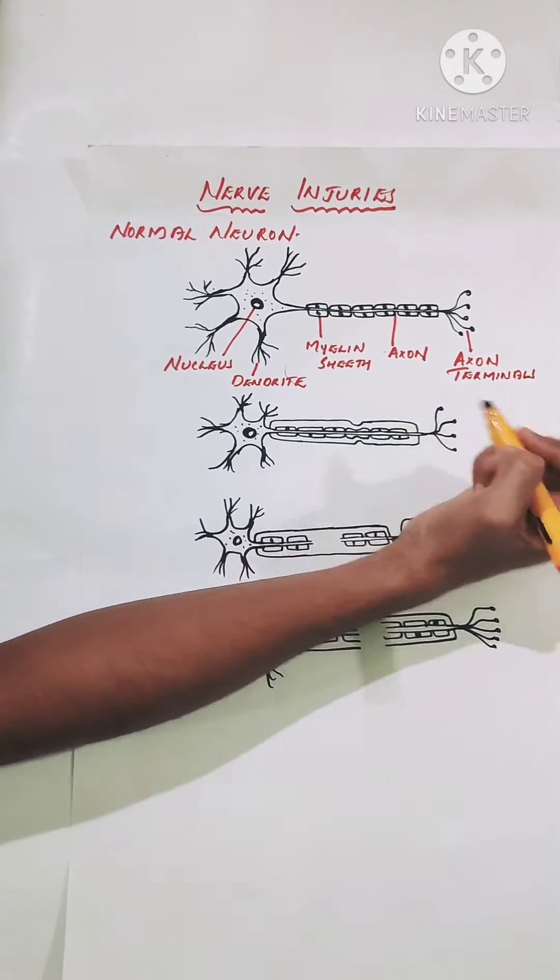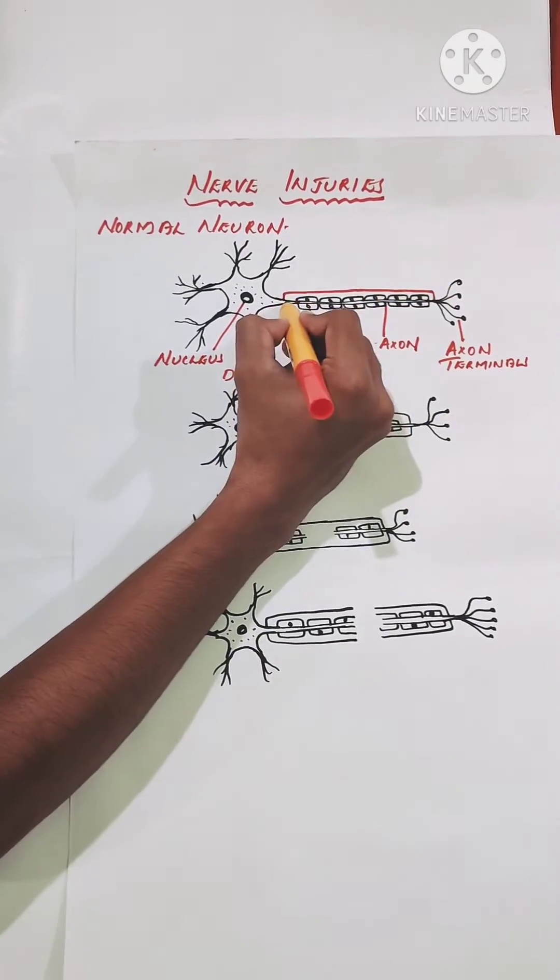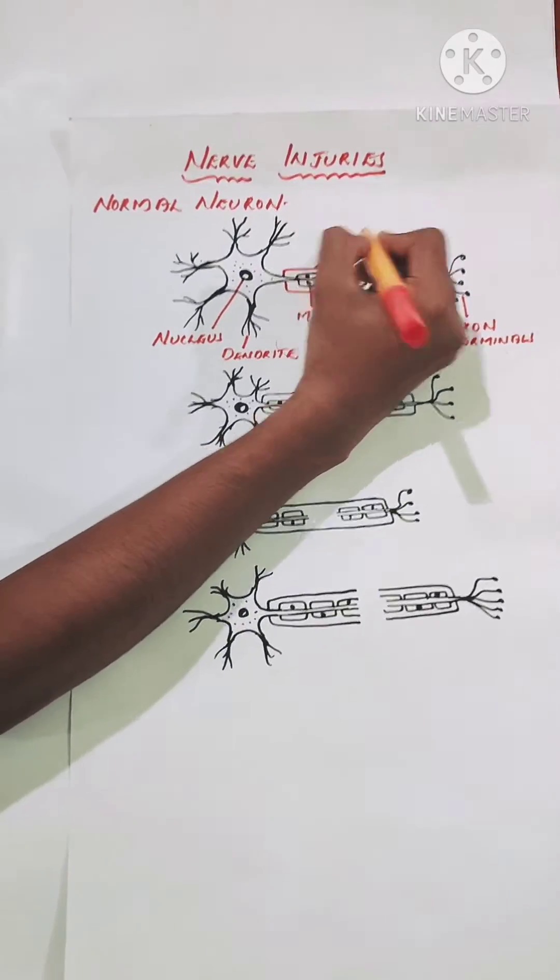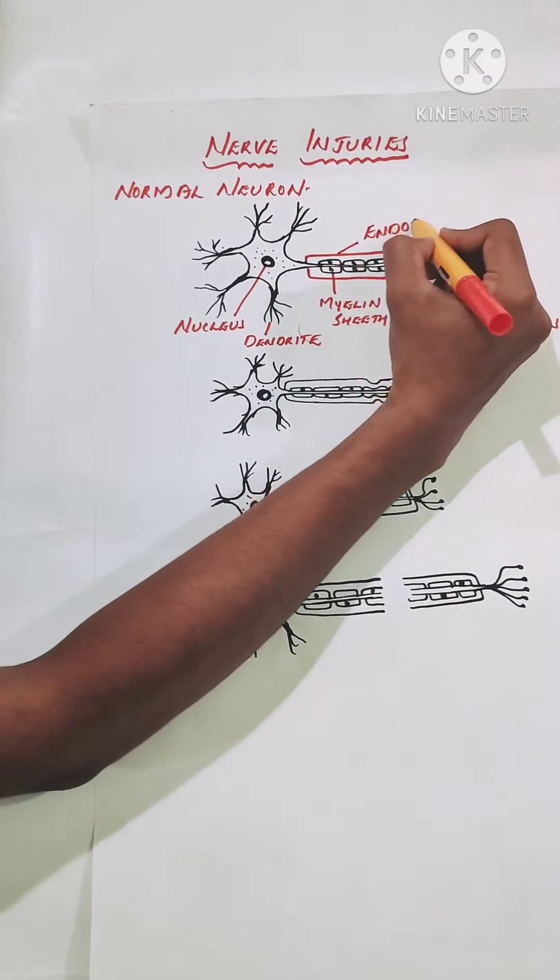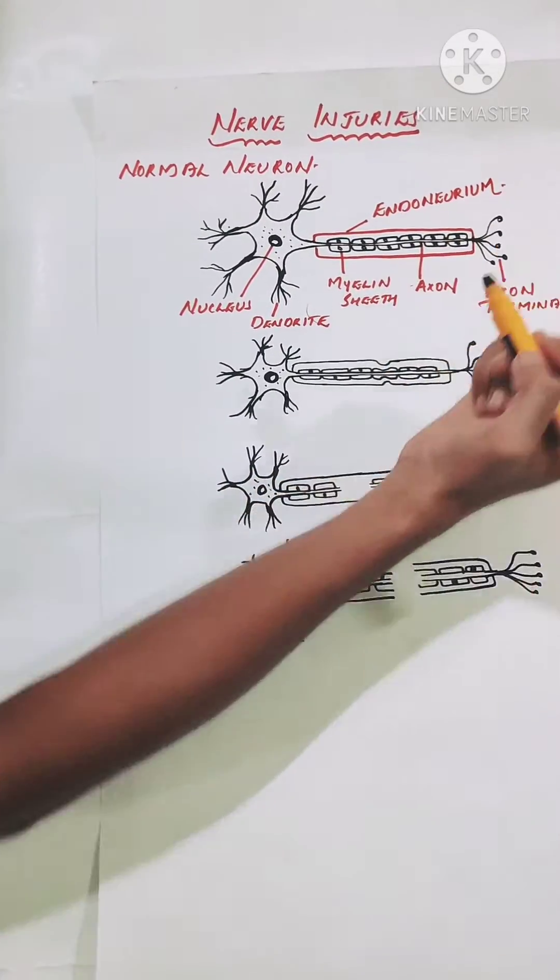And finally, in the drawing, I've marked the endoneurium here which is a covering of the neuron. I hope you all know about the coverings of the nerves: endoneurium, perineurium, and epineurium.